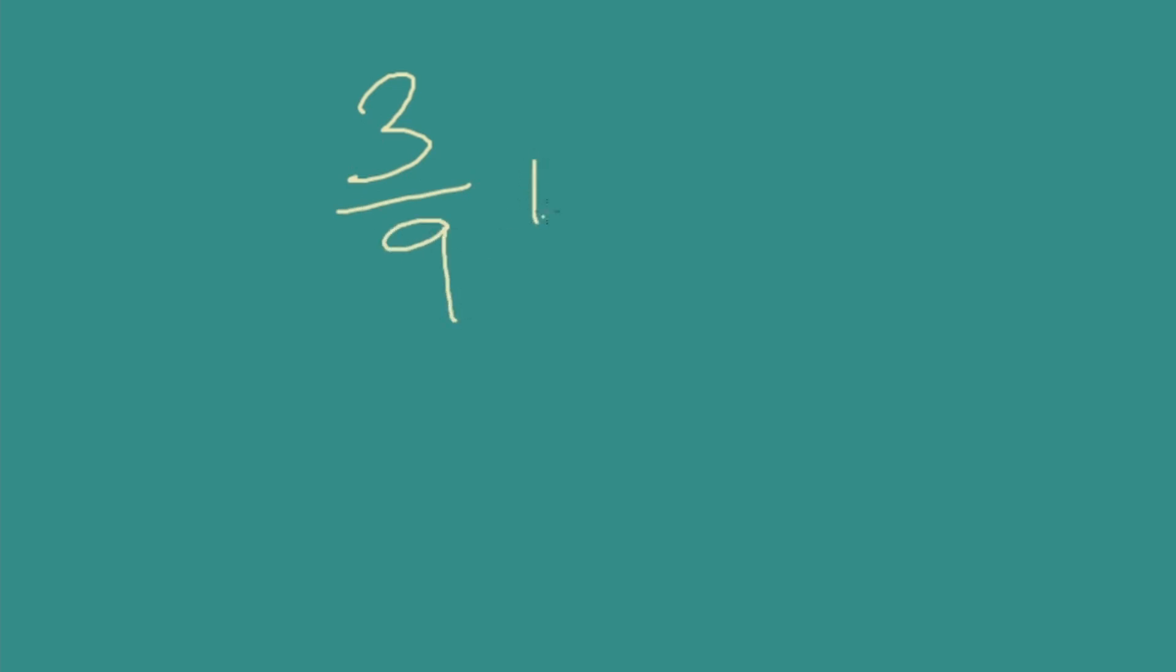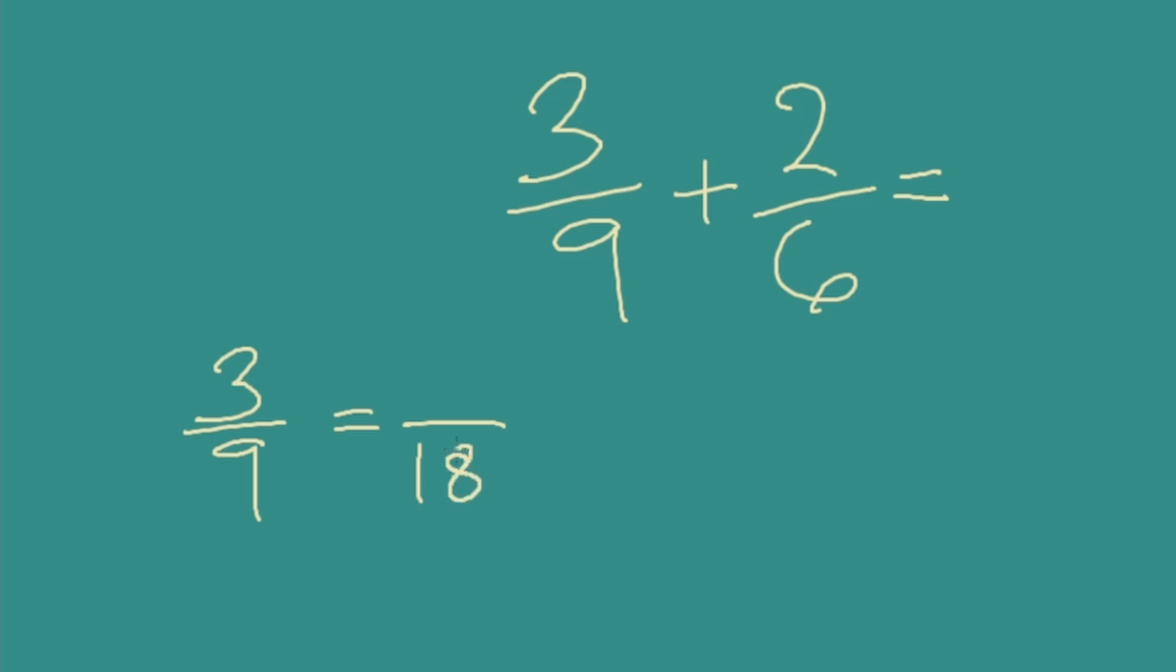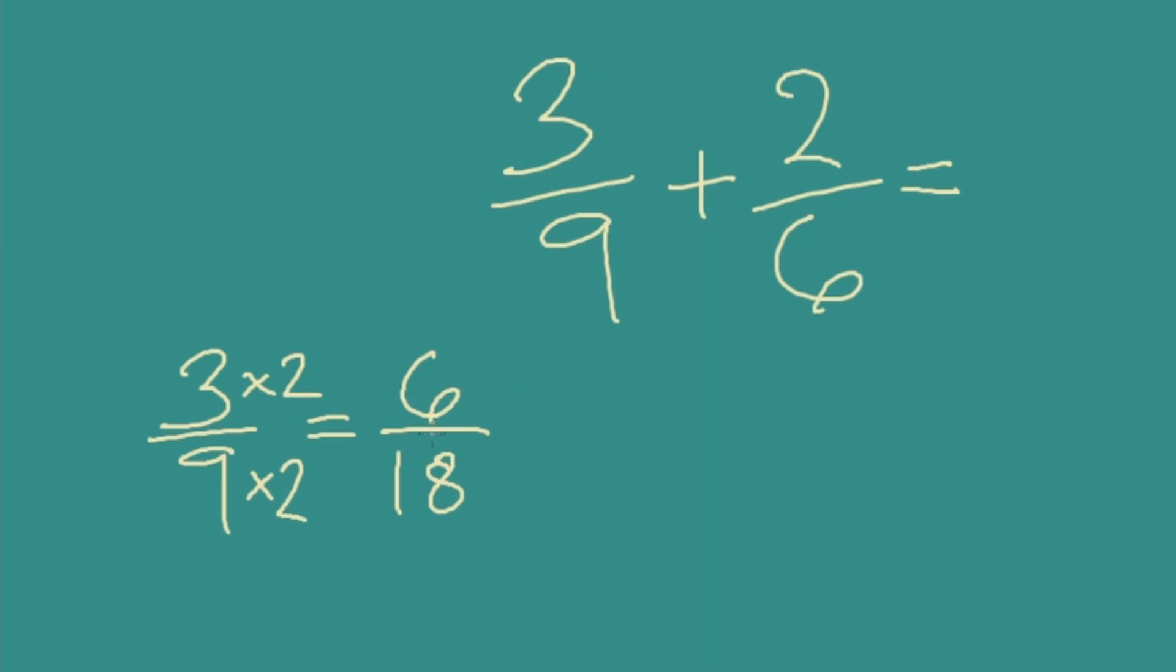So I'm going to rewrite the problem down here, 3/9 plus 2/6, and we're going to transform them so that they both have a denominator of 18. So let's first find an equivalent fraction for 3/9 that has a denominator of 18. Well, if I start at 9 and I need to get to 18, how could I do that? Or how many 9s are in 18? Two. So we multiply 9 by 2 to get 18. But to maintain balance in the fraction, to make an equivalent fraction with the same value, we have to do the same to the top. So we multiply 3 by 2. 3 by 2 is 6. 6/18 is our equivalent fraction.